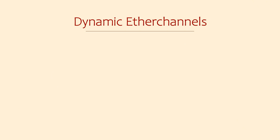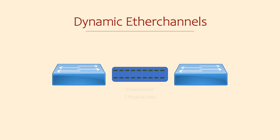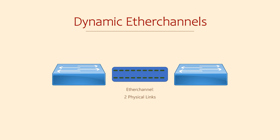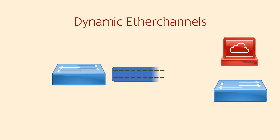We can improve on EtherChannels by making them dynamic. What makes them dynamic? They exchange messages between the two devices to agree on whether an EtherChannel should exist or not. Imagine two switches are connected with an EtherChannel, but someone comes along and moves one of the links to a different device. EtherChannels are intended to be between two devices only. If this were configured as a manual EtherChannel, the switch would continue forwarding traffic over the link, assuming that the other end is also correctly configured.